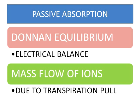The next mode is mass flow of ions. Kramer in 1956 proposed that ions move through roots to the shoot along the mass flow of water. According to this theory, an increase in the rate of transpiration causes an increase in salt uptake. Mass flow of ions occurs due to transpiration pull.